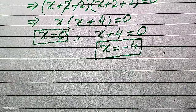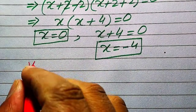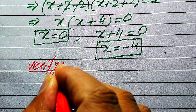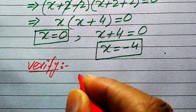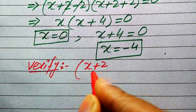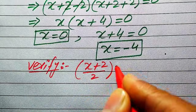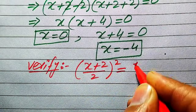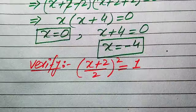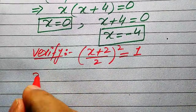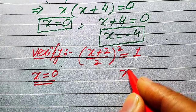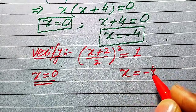Now we verify whether these two values are solutions or extraneous roots. We copy down the given equation: (x + 2) / 2, whole squared, equals 1. On one side we will substitute x = 0, and on the other side we will verify x = −4.